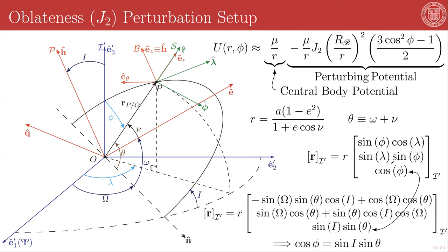We have also similarly previously written the components of the orbital radius in terms of the Euler angles defining the Keplerian element set, that is omega and capital Omega and I and nu. And when we write out that version of the components, we get this matrix here.